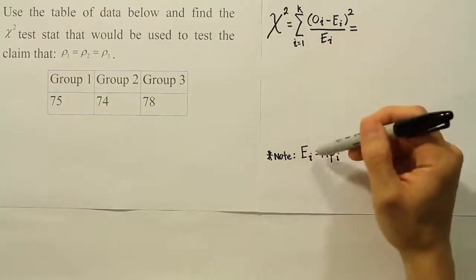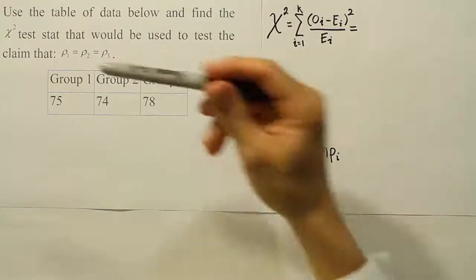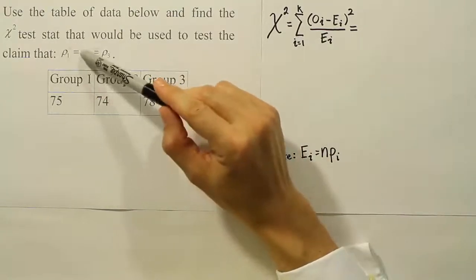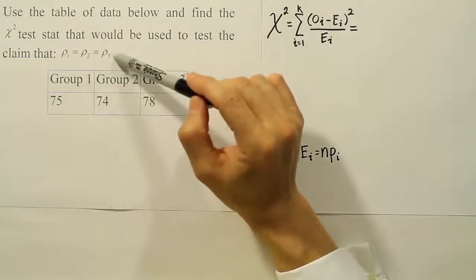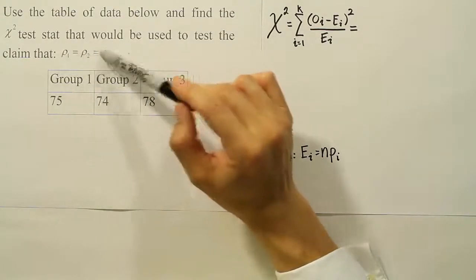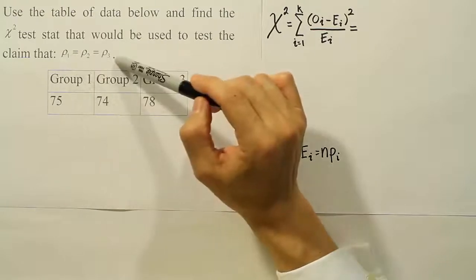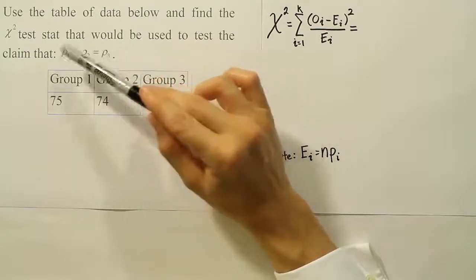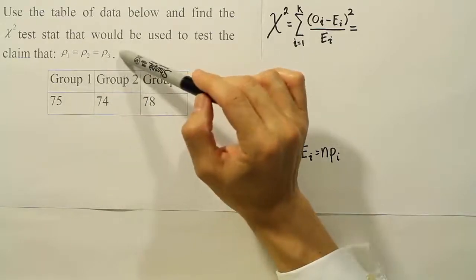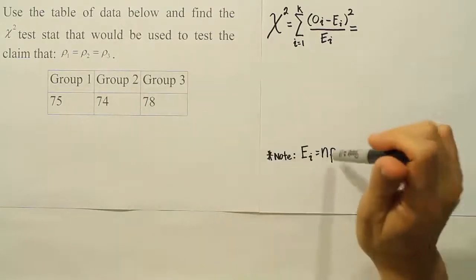So E_i equals n times p_i. Because we have this hypothesis that all these probabilities or proportions are the same, and they have to add up to 1 under our idea of the theory for this section, so if they have to sum up to 1 and they're all the same, it must mean they're each 1 third, because 1 third plus 1 third plus 1 third makes 1. So we know that these are each 1 third.